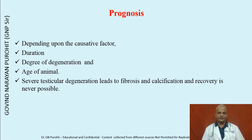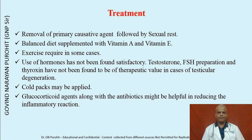The prognosis depends on the causative factor, duration of the problem, degree of degeneration, and age of the animal. Severe testicular degeneration leads to fibrosis and calcification, and recovery is seldom possible. Treatment includes removal of the primary cause followed by sexual rest, balanced diet supplemented with vitamin A and vitamin E, and exercise. Use of hormones such as testosterone, FSH preparations, and thyroxin has not been found to be of therapeutic value in testicular degeneration.